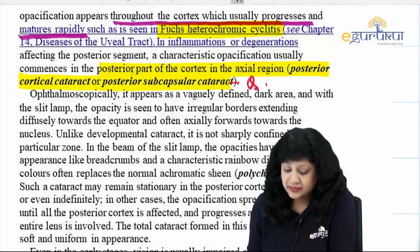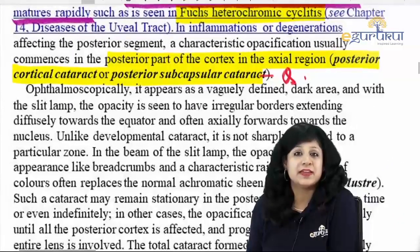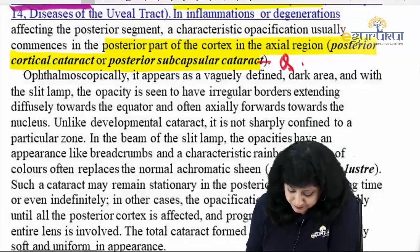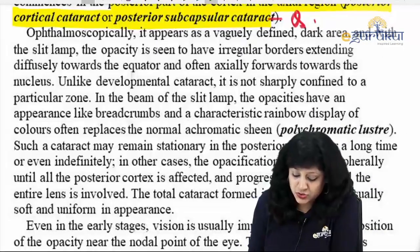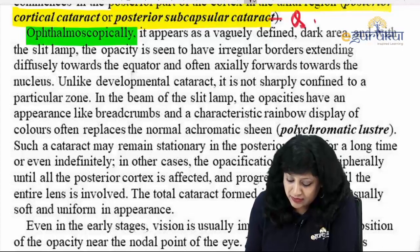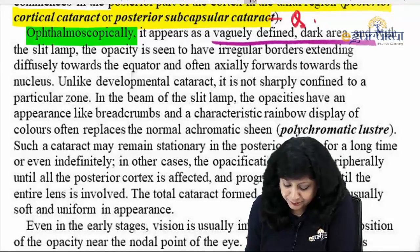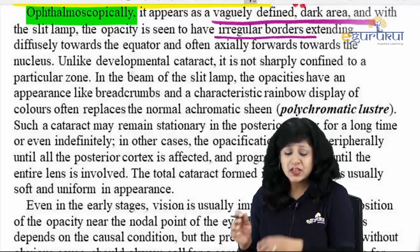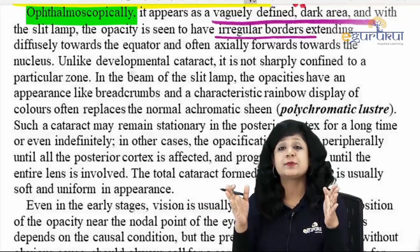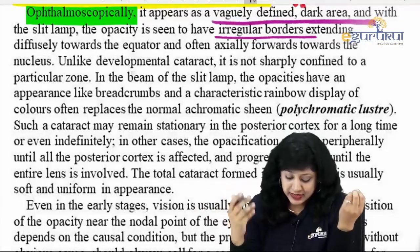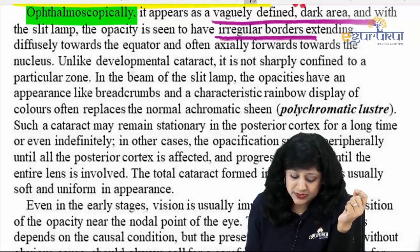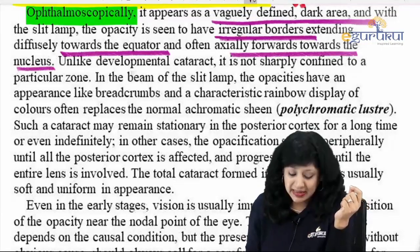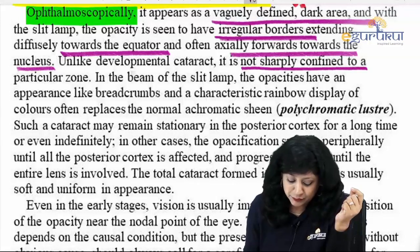The most common type of cataract in complicated cataract is the posterior cortical and posterior subcapsular. If you examine this patient on ophthalmoscopy, you get a vaguely defined dark area. With the slit lamp, the opacities seem to have irregular borders, spreading extensively, going towards the equator and often axially towards the nucleus. Unlike developmental cataract, it is not sharply confined to a particular zone.